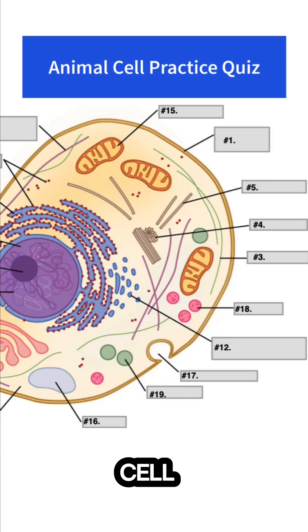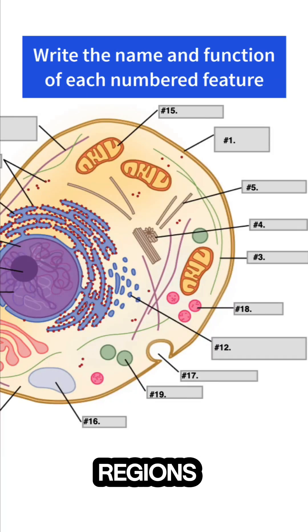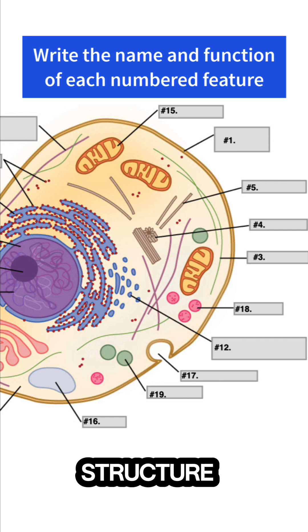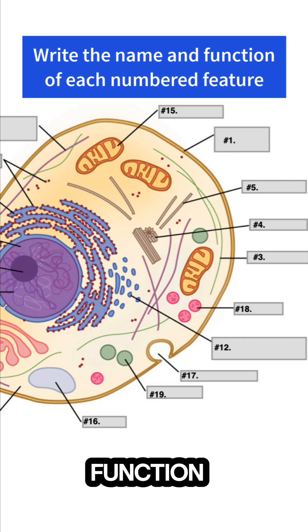Let's try an animal cell quiz. For each of the 19 numbered regions, practice writing down the name of the structure and tell me what its function is. Ready? Let's do it.